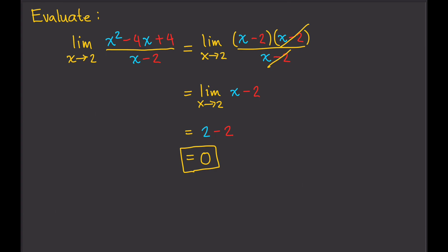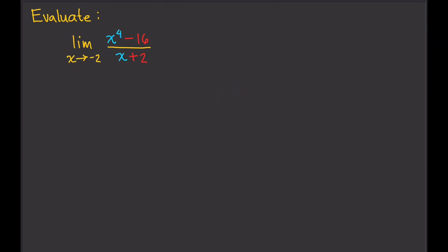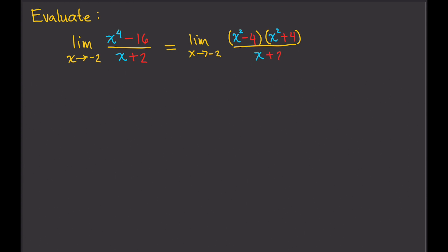Let's have another example. Again, if we plug in x equals negative 2, the denominator equals 0, so we can't do that. We can try to factor the numerator. The numerator is a difference of two squares — the first square is x squared, the second square is 4 because the square root of 4 squared is 4. We can write that as x squared minus 4 times x squared plus 4, with denominator x plus 2.